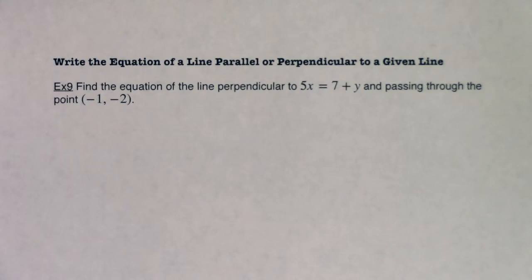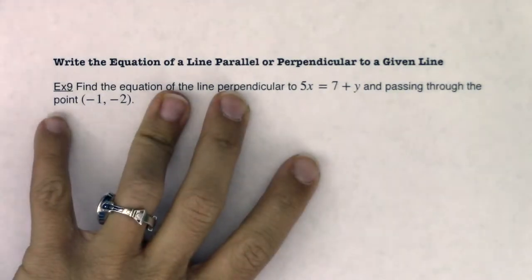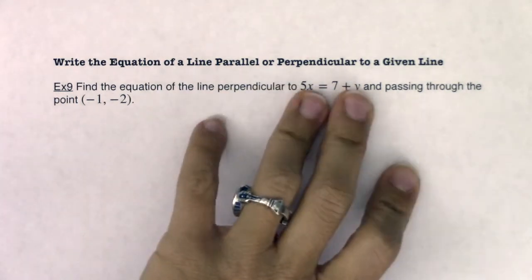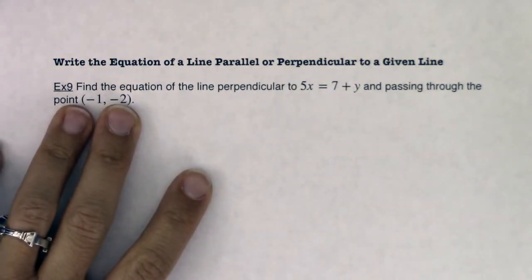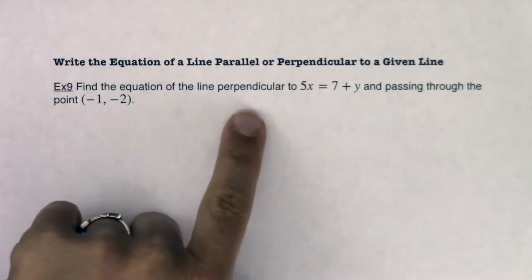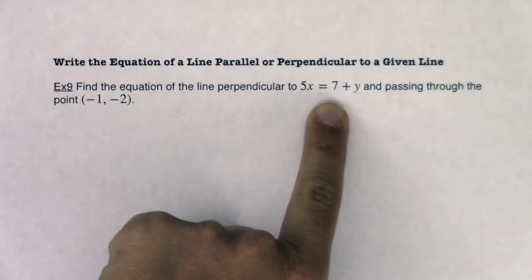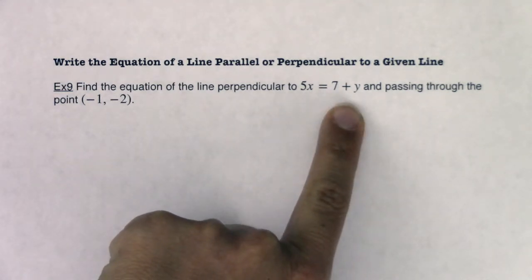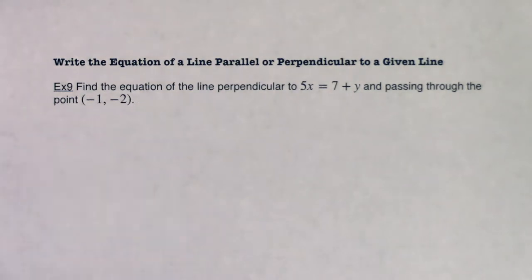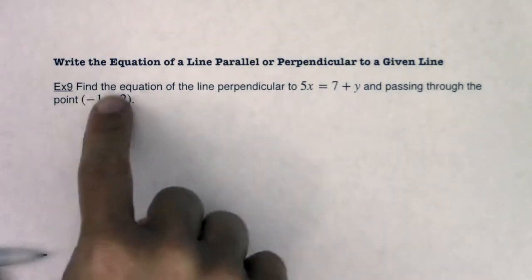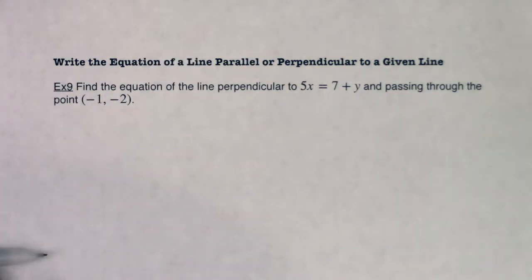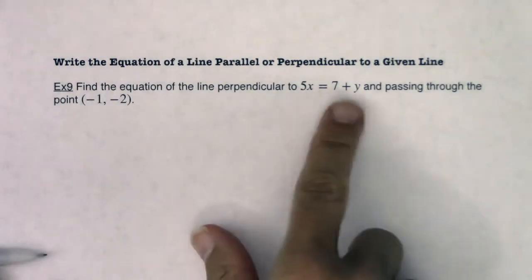Okay gang, last example in this section. We're going to write the equation of a line parallel or perpendicular to a given line. Find the equation of the line perpendicular to 5x equaling 7 plus y and passing through the point negative 1, negative 2. All right, so I have my point on my line. I'll just keep that off to the side for a little bit. I really want to focus on this.